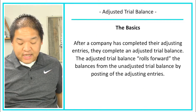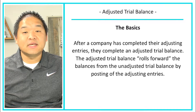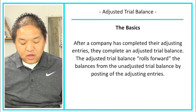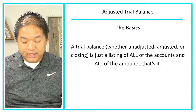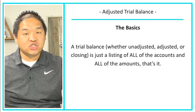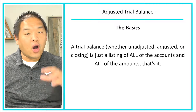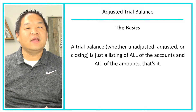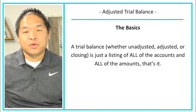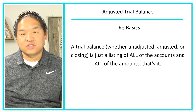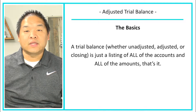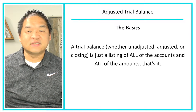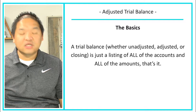After a company has completed their adjusting entries they complete an adjusted trial balance. The adjusted trial balance rolls forward the balances from the unadjusted trial balance as well as all of the postings of the adjusting entries. A trial balance — whether unadjusted, adjusted, or closing — is simply a listing of all accounts and all amounts. If an account has a zero balance, it's typically not included on the trial balance.